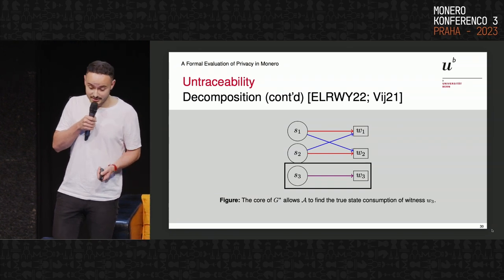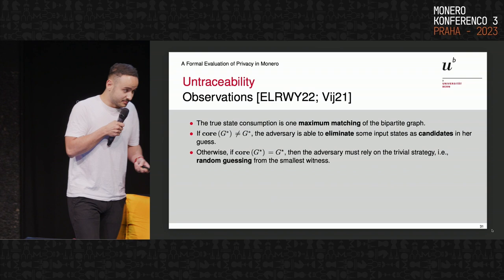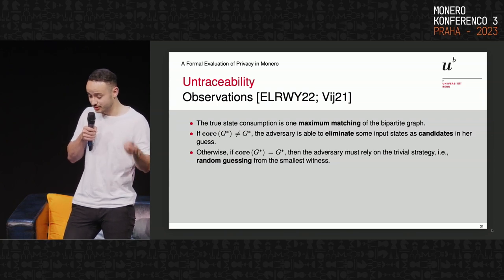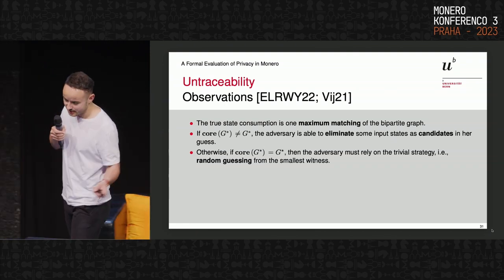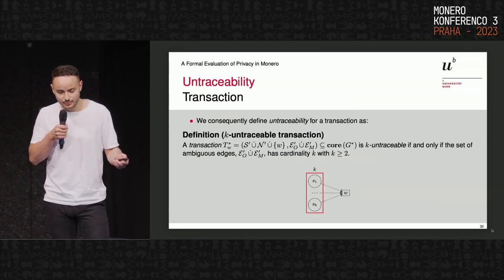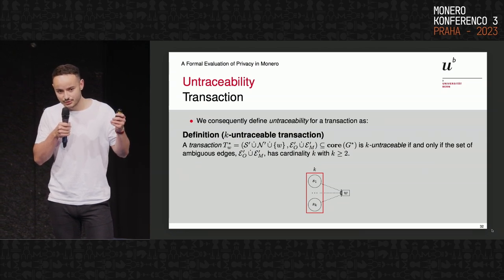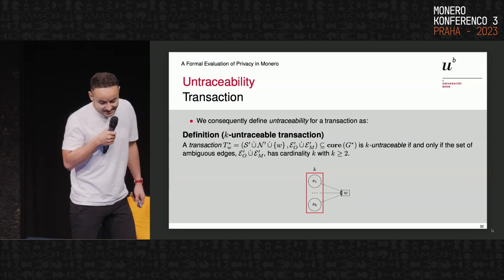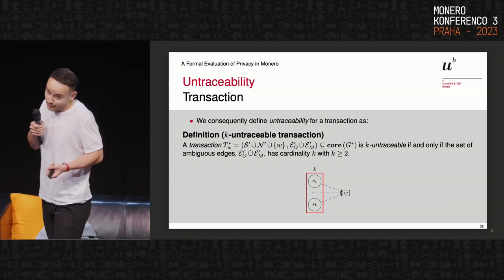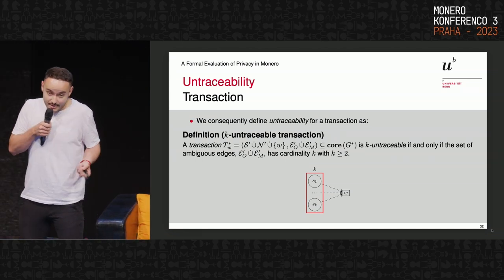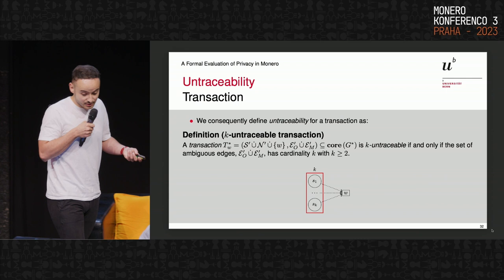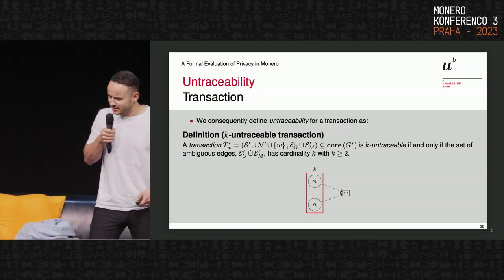This is known research which we are here formalizing as untraceability. If the core of G is not equal to G, the adversary is able to prune edges and reduce the untraceability set. Otherwise, if the core of G equals G, the adversary does random guessing on the witness with the smallest in-degree. My first definition: a k-untraceable transaction is a transaction that is a subgraph of the core, with no consuming edges — only ambiguous edges — and those ambiguous edges must number at least two, where k represents that count of ambiguous edges.